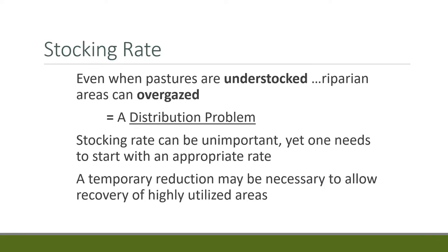Regarding stocking rate and riparian grazing, ranchers often talk about a pasture being understocked but overgrazed — meaning the pasture stocking rate seems appropriate for overall forage, but since riparian areas are heavily used, they're overgrazed. This indicates a distribution problem. In some cases stocking rate is unimportant — if the riparian area is being heavily grazed, it's a distribution problem, not a stocking rate problem. Temporary stocking rate reductions may be necessary to allow heavily utilized areas to recover, but just changing stocking rate generally won't solve riparian area problems.